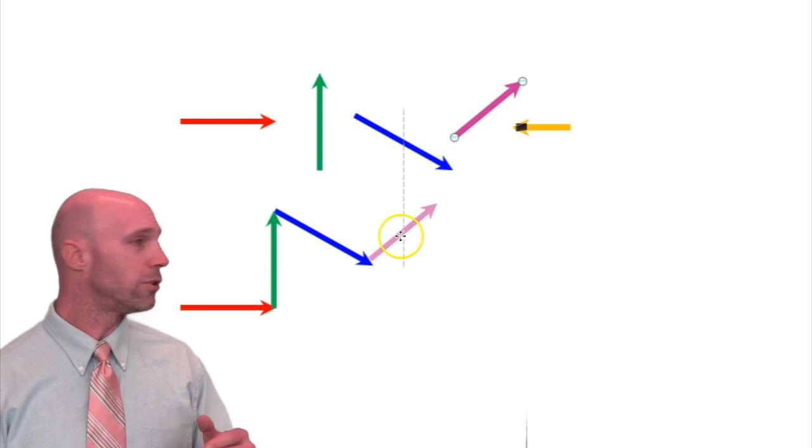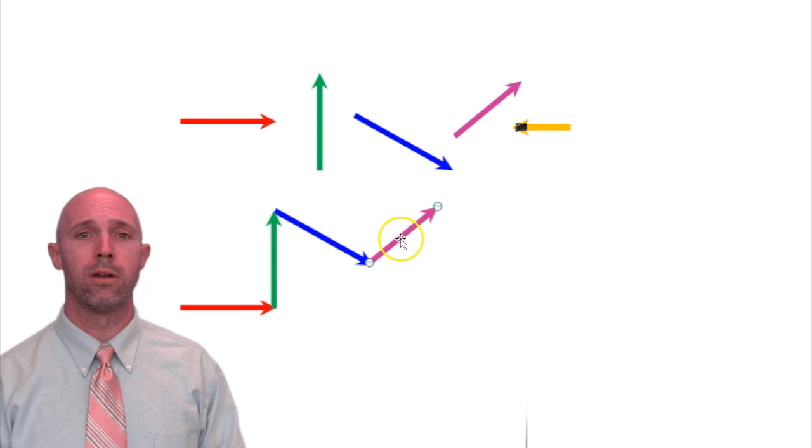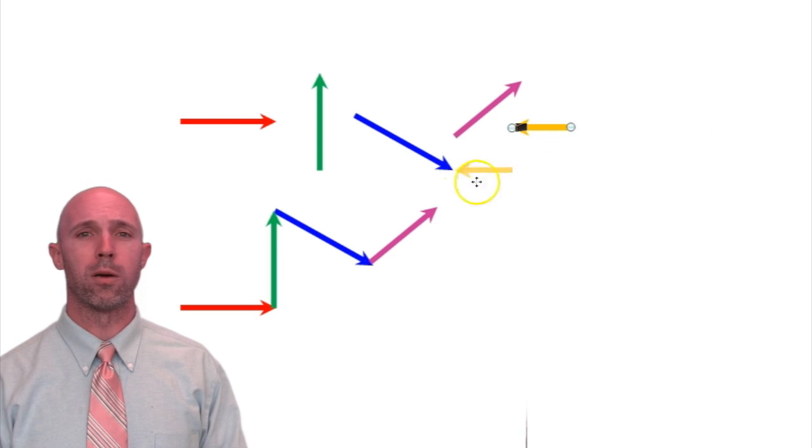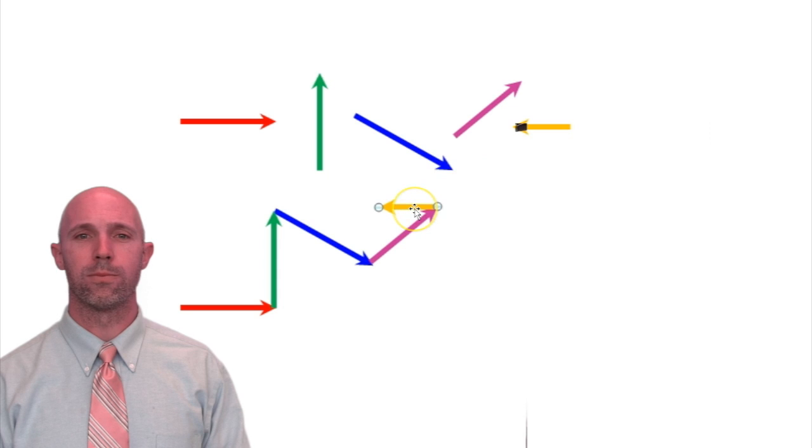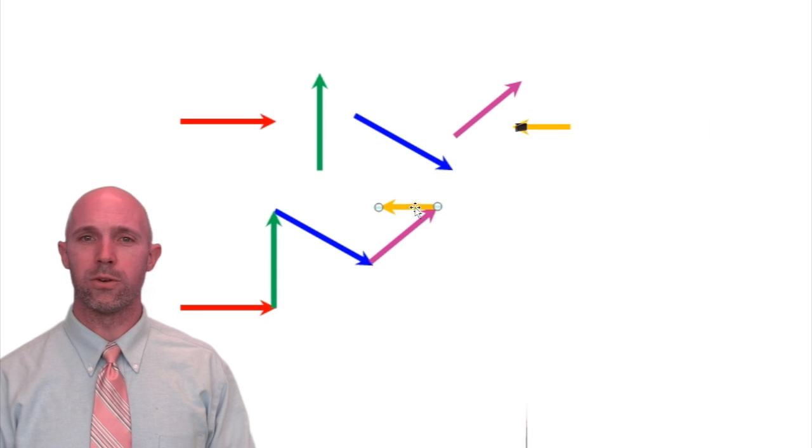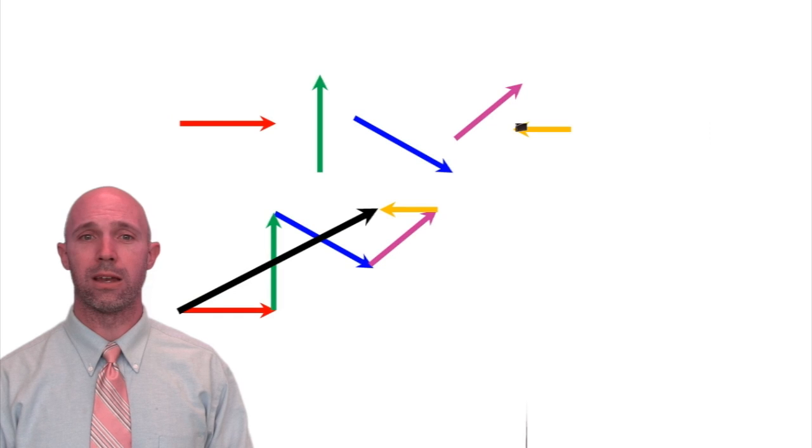Right? So the tip of the blue arrow to the tail of the purple arrow. Same thing. The tip of purple to the tail of the orange. And then you draw your resultant from the beginning to the end.